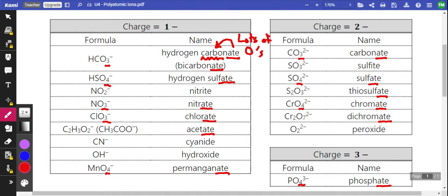Now, there's something related to the ATE ending. And that is the ITE ending. So like along with nitrate, we also have nitrite. Along with sulfate, we have sulfite.